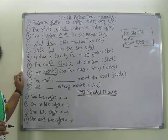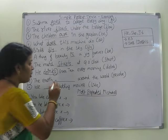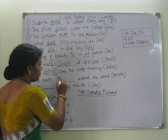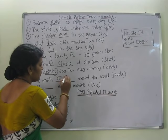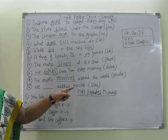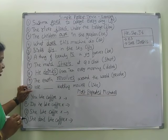The earth ___ around the world. 'Revolve' is given. So: The earth revolves — 'it' comes, so we add 's'. The earth revolves around the world.